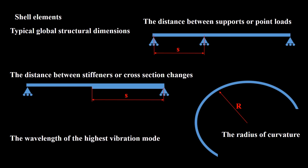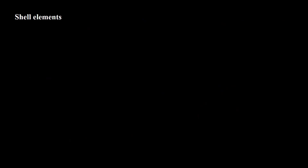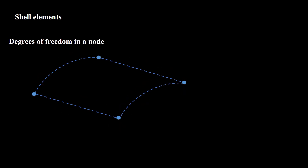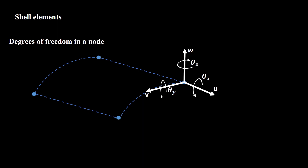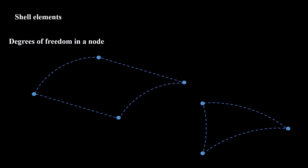If all of these dimensions are at least 10 times bigger than the thickness, we can consider using shell elements and check the stress condition. In a node of a shell element there are five or six degrees of freedom — each node can translate in three directions, and rotations around these directions are also considered. There are shell elements that do not consider rotation around the z-axis and have five degrees of freedom. First-order shell elements have four or three nodes; we can also use second-order shell elements with eight or six nodes.